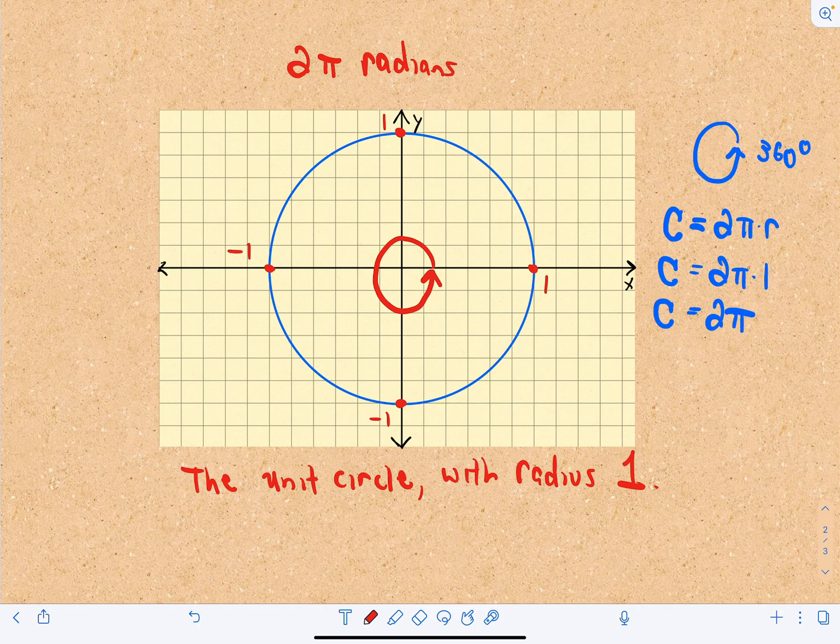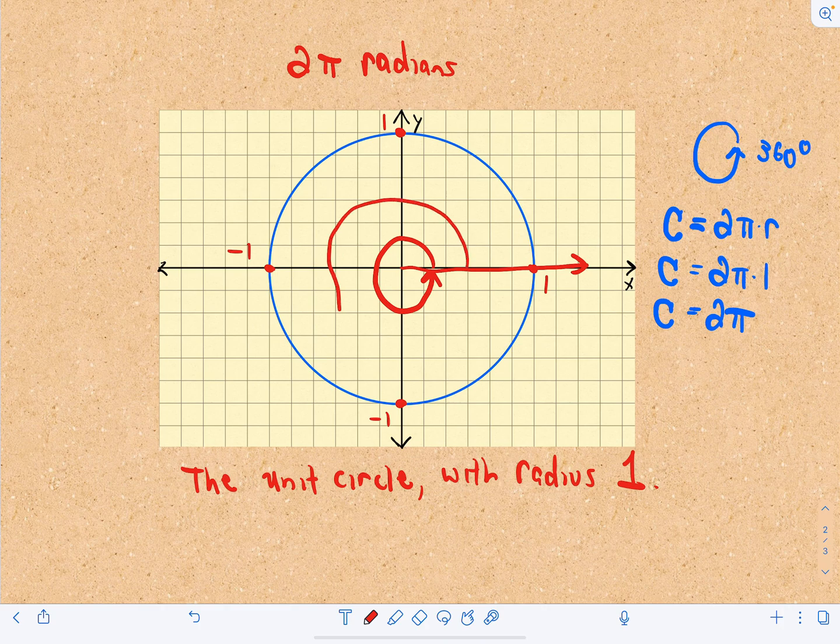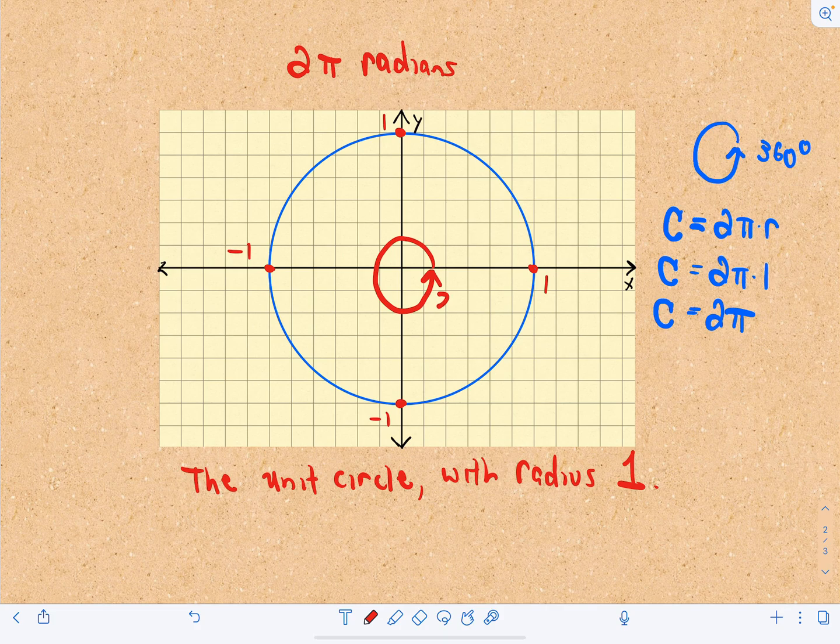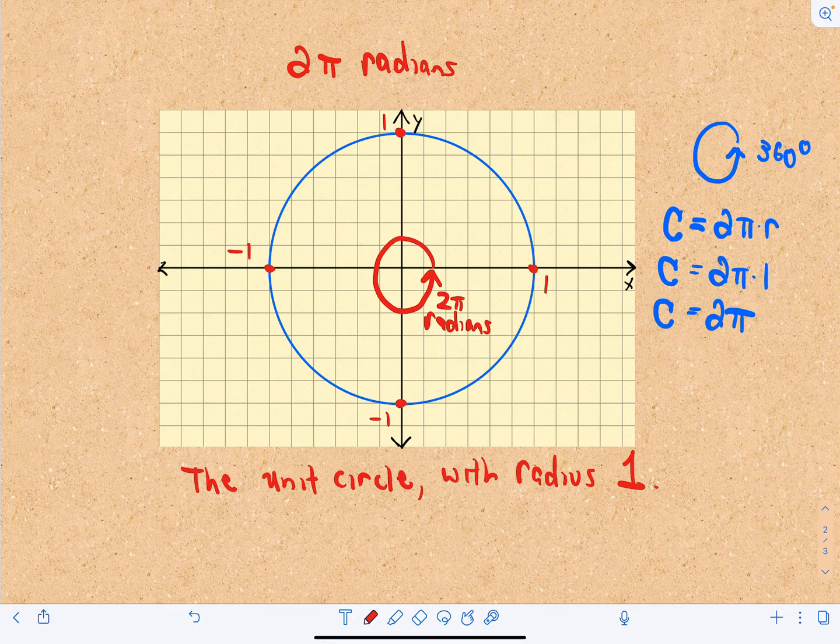And just like I've drawn it, remember, we measure, we start from the positive x-axis, and then we move counter-clockwise. Well, if the entire distance around is 2 pi radians, that's why halfway would be pi radians.